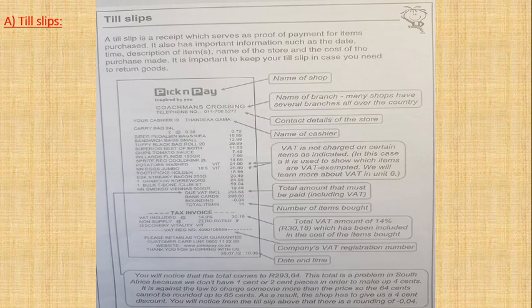Let's continue. You'll see on the till slip all the information you can get from it. Just remember, guys, if you see hashtag signs on a till slip, sometimes it can be an at sign or an asterisk sign - the asterisk looks like a little cross. That indicates VAT exempted items. In this case, you'll see it's potatoes and jumbo eggs that are VAT exempted.